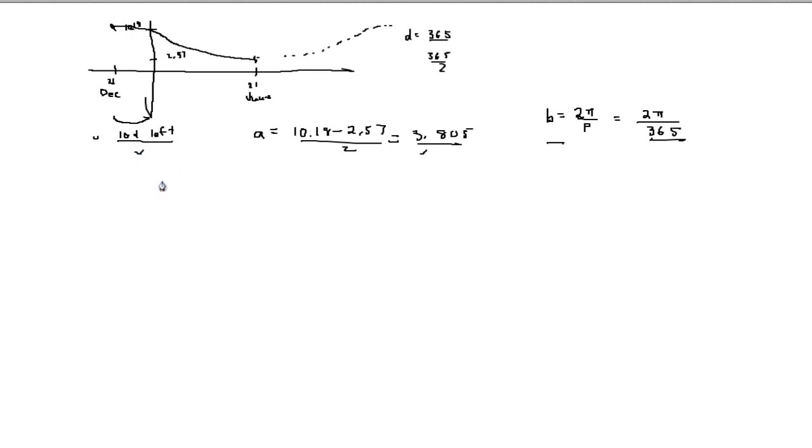The last thing that we need to determine is the vertical translation. In order to do that, which is going to be represented by D, we get our maximum point 10.18, which is basically the y-coordinate, add it to the minimum point 2.57, and divide it by 2, which will give us 6.375.